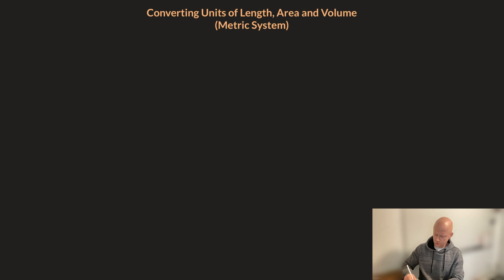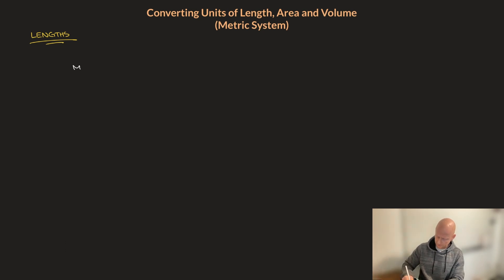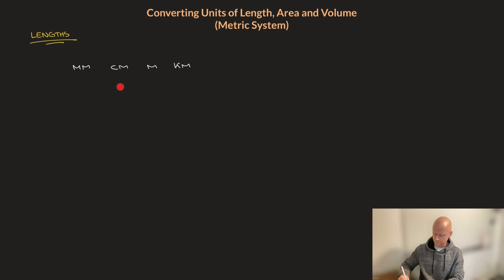Let's get started. First of all, I'll take care of lengths. Now the units that you need to be comfortable converting to and from are millimeters, centimeters, meters, and kilometers. And to convert a length written in any one of these units to the next, we need conversion factors. Here they are. To write a length that's in kilometers in meters, we need to multiply by 1000.